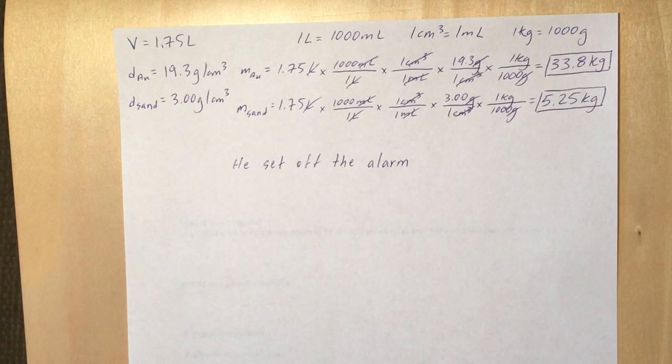So both of those answers should be in three sig figs because of the volume of the objects that was given in the problem. So we're going to go with the given as our significant digits and remember your units as well.